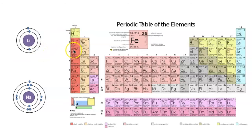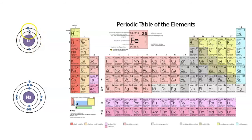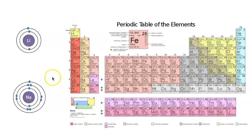All atoms in the same group will have the same number of valence electrons. If we look at the Bohr's model of lithium, we see that there is one valence electron on the outermost shell, and there are two energy levels. The two energy levels correspond to period two, but the one valence electron is because it is in group one.